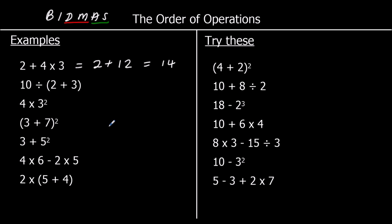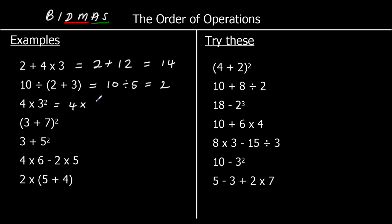The second one: we do have brackets, so I'm going to do the bracket first. 2 plus 3 is 5, so that means we've got 10 divided by 5. 10 divided by 5 is 2. The third one: we don't have brackets, but we do have indices. We've got 3 squared here. So 3 squared is 9, then we've got 4 times 9, which is 36.